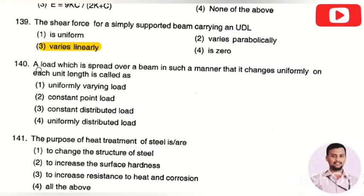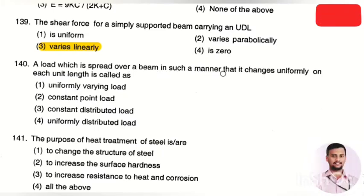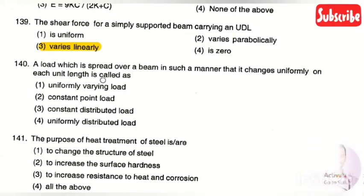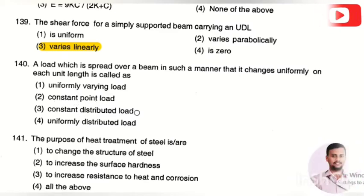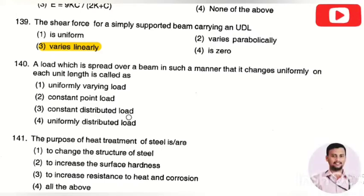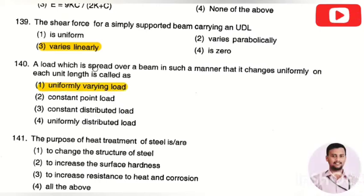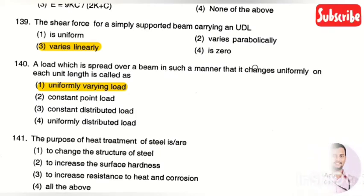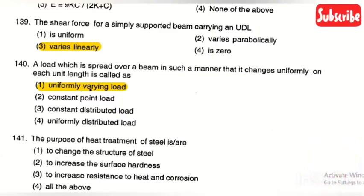The next question: a load which is spread over a beam in such a manner that it changes uniformly on each unit length is called — option 1: uniformly varying load, option 2: constant point load, option 3: constant distributed load, option 4: uniformly distributed load. The right answer is option 1, uniformly varying load, since the load changes uniformly with respect to length.